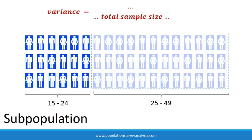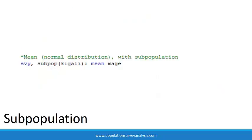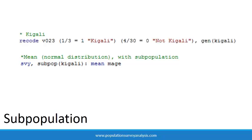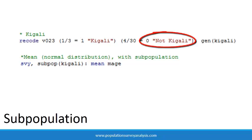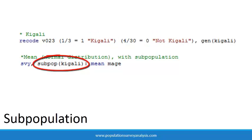If we drop some observations, the variance will be incorrect and could lead to incorrect answers to our research question. The correct way to perform a subpopulation analysis with survey data in Stata is to specify the subpopulation in an SVY colon statement. We create a new variable where 1 is equal to the subpopulation and 0 is equal to not in the subpopulation. This way Stata knows to use only the subpopulation data in the mean estimator, but will still count the total number of observations for the variance estimator.